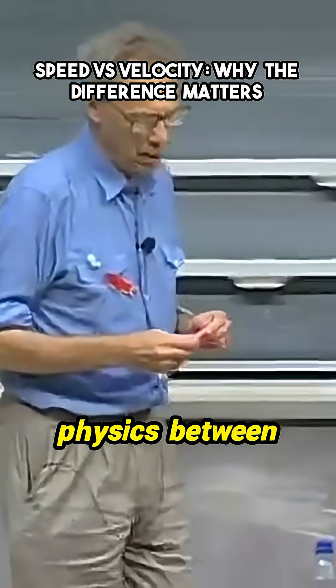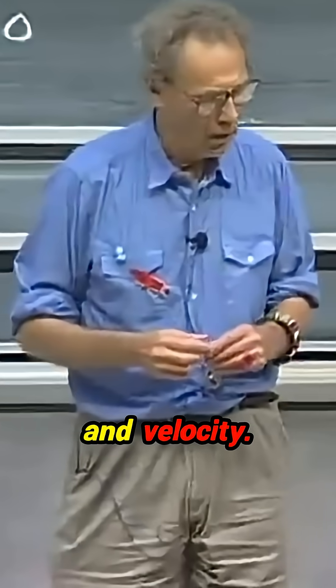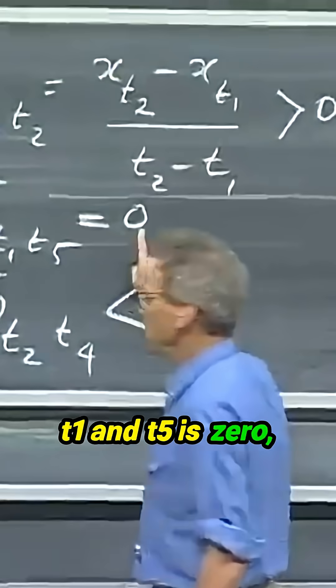There is a very big difference in physics between speed and velocity. The average velocity between time t1 and t5 is zero, but the average speed is not.